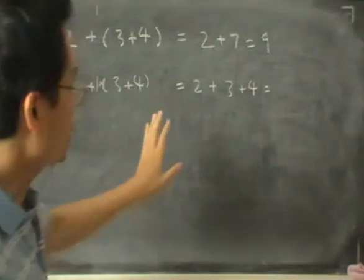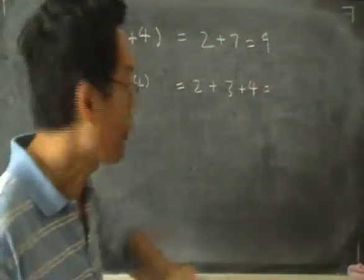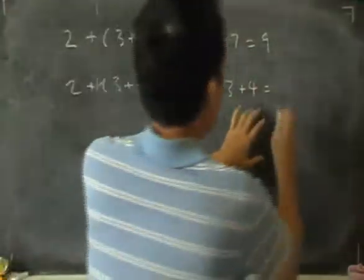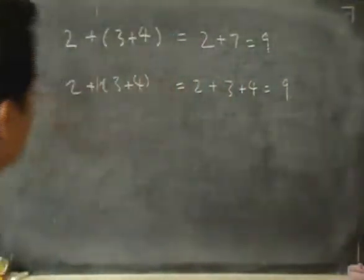Now if you add this up, you'll find that you'll get the same answer. 2 plus 3 plus 4 is also 9. So that's simple enough.